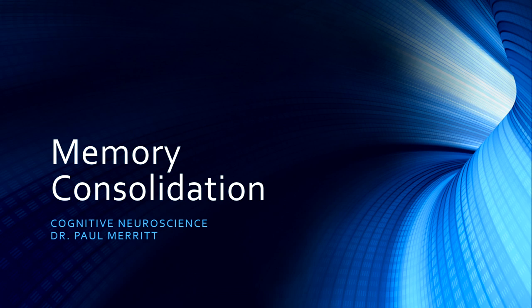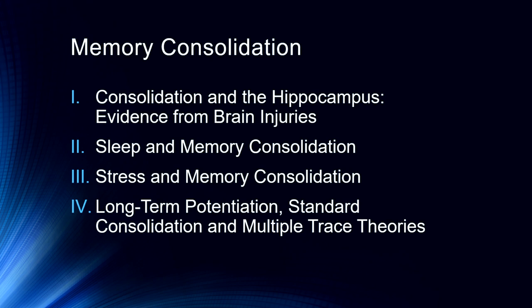This is the final lecture in the cognitive neuroscience of human memory section. Last lecture we talked about neuroimaging and memory, and now we want to talk at a general level about the underlying neurobiological processes involved, called memory consolidation. We're not going to dive into the NMDA receptor and a lot of the other things involved, but I'll give a general overview of how consolidation works and some of the evidence for it. We'll start with consolidation in the hippocampus.